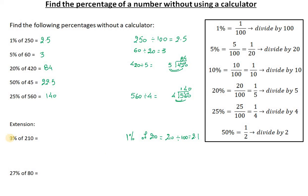Now since I'm looking for 3%, if 1% is 2.1 I just need to times by 3. So 3% of 210 is in fact 6.3.